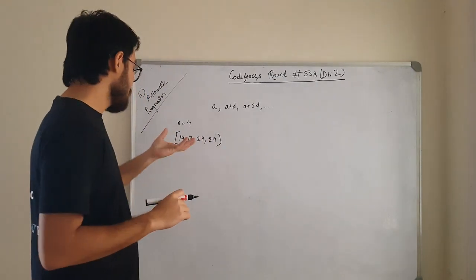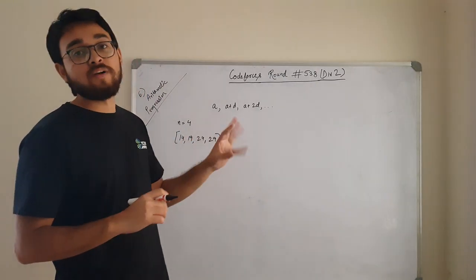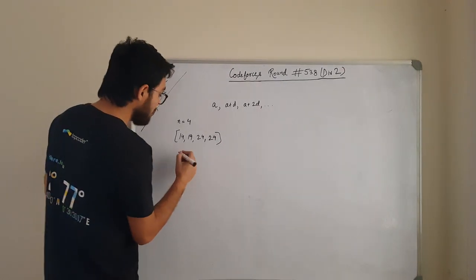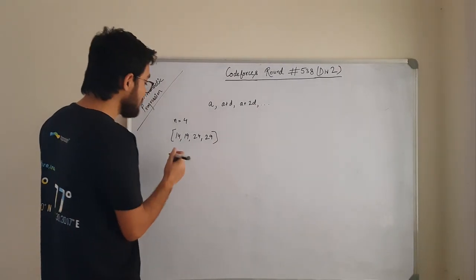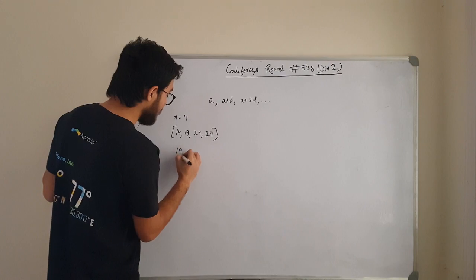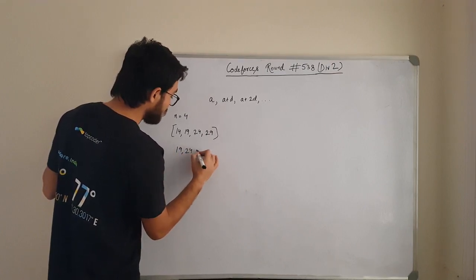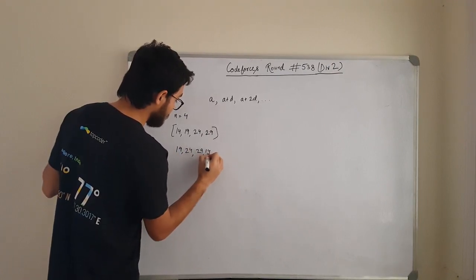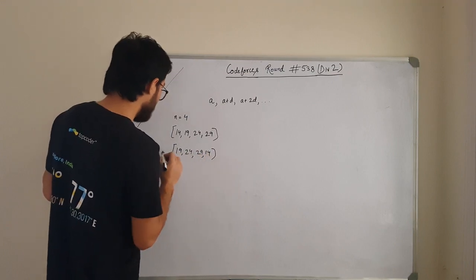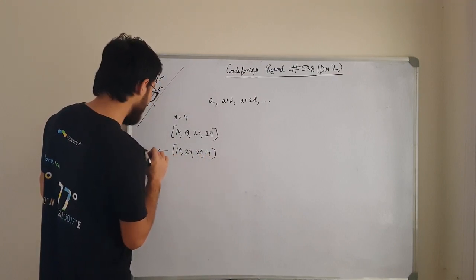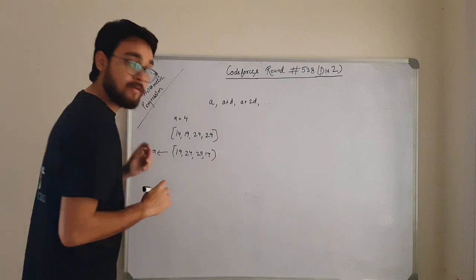In the server, this series is present in a shuffled manner. The shuffled manner will be any shuffled order of this. Say if we have 19, 24, 29, 40. So this is what the server has.